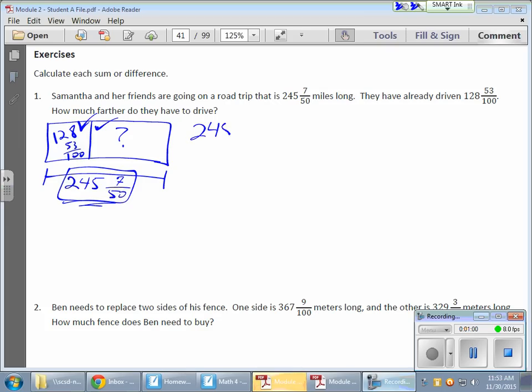So let's set that up. So I'm going to have 245 and 7/50 minus 128 and 53/100. It's a nice little subtraction problem here. These two guys have names, by the way. This guy is called your minuend. And this guy is called your subtrahend. In case you didn't know, your subtrahend.